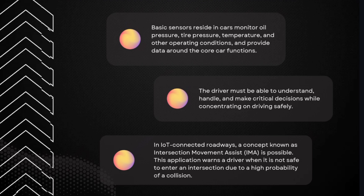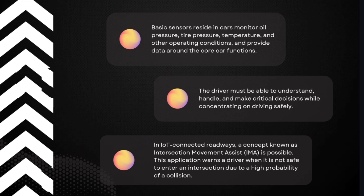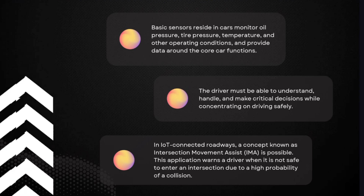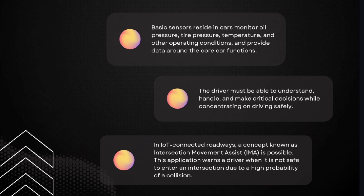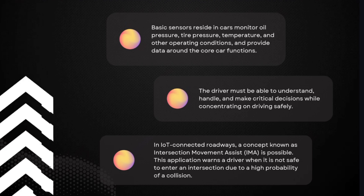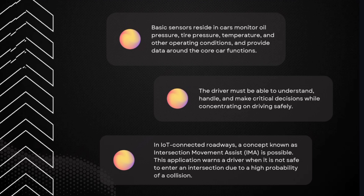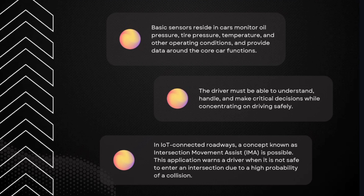A concept related to IoT Connected Roadways is Intersection Movement Assist, or IMA. This application warns a driver when it is not safe to enter an intersection due to a high probability of a collision. If it is a dangerous area, the application signals that there should be no accident in that area.